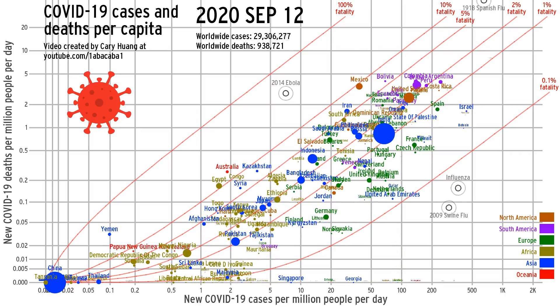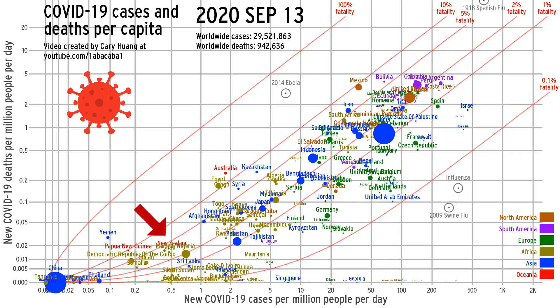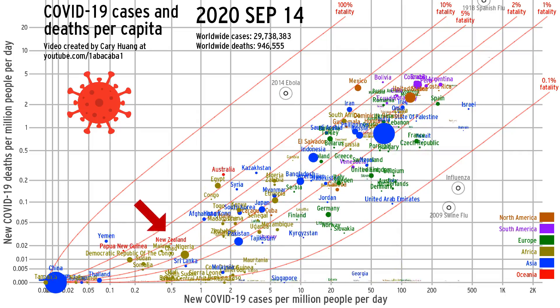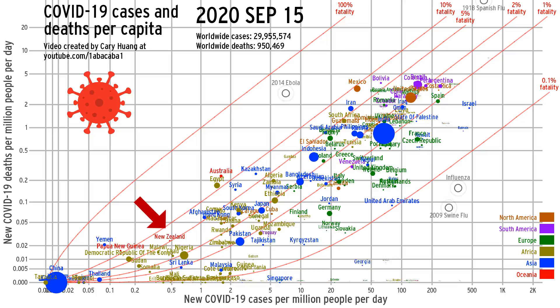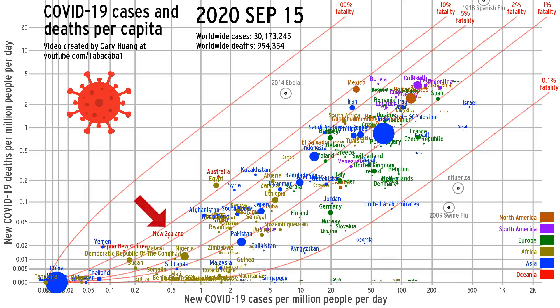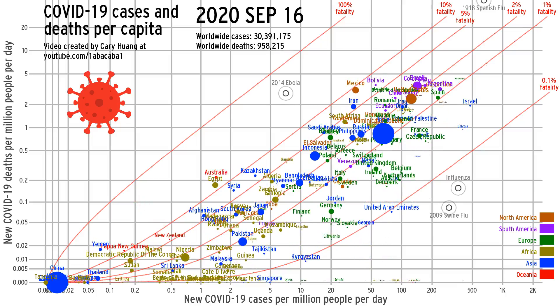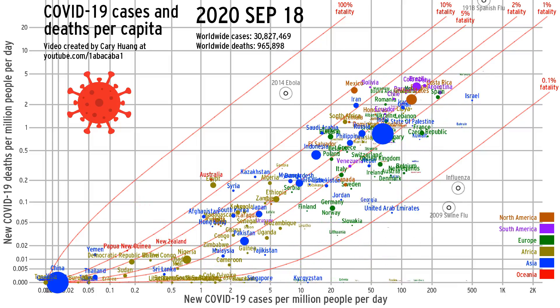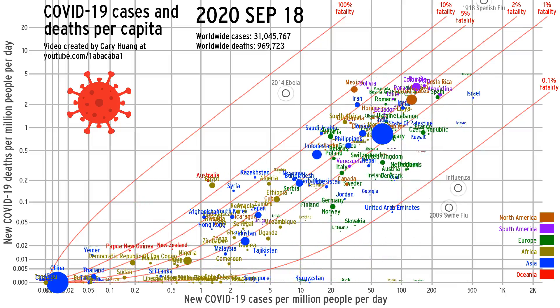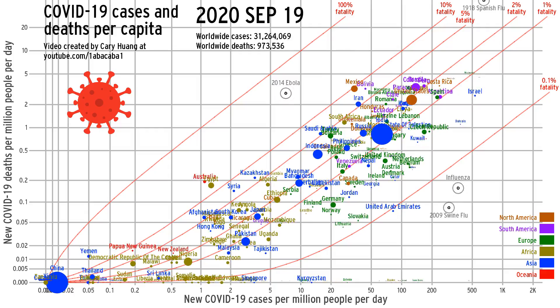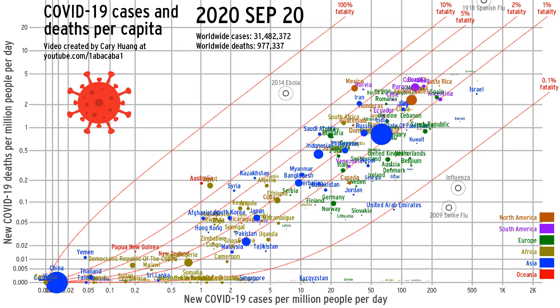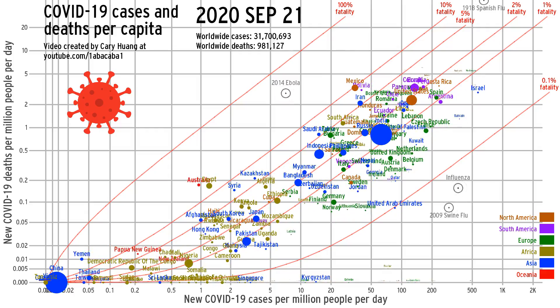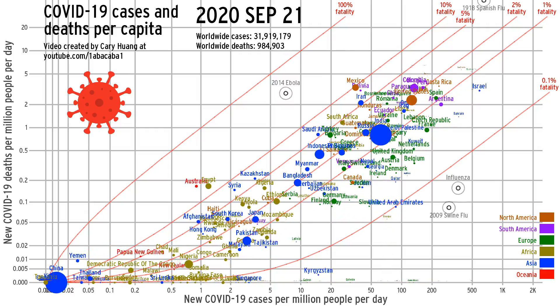In mid-September, New Zealand sadly experienced their 25th COVID-19 death. Fortunately, there have been no deaths in that country since then, so you can see New Zealand's red bubble drop to the x-axis and stay there for the remainder of the video.